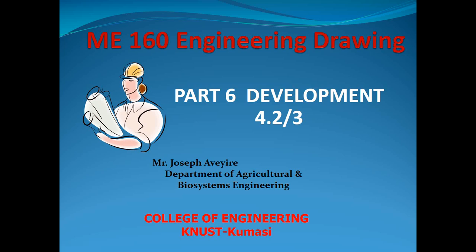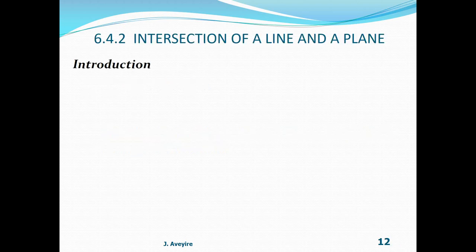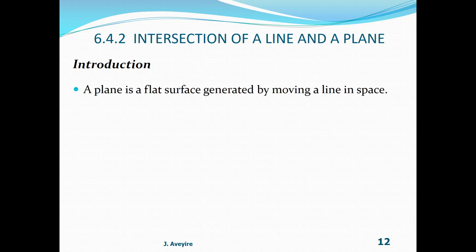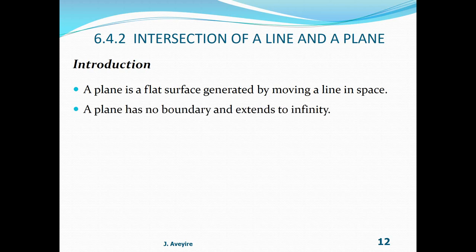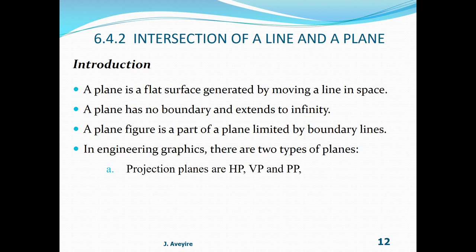Welcome to ME160 Engineering Drawing, Part 6, Development 4.2, Stroke 3. Learning objective: Demonstrate the intersection of a line in a plane by the edge view method. A plane is a flat surface generated by moving a line in space. A plane has no boundary and extends to infinity. A plane figure is a figure of a plane limited by boundary lines. In engineering graphics there are two types of planes: projection planes — HP, VP, and PP — and general planes.